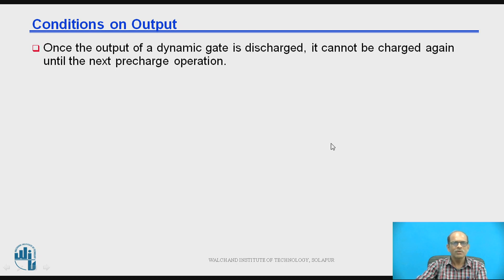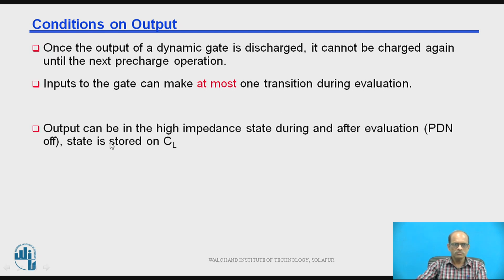Now conditions on the output. Now once the output of dynamic gate is discharged, it cannot be charged again until the next pre-charge. This is first condition. Second condition, input to the gate can make at the most one transition during the evaluation phase. Output can be in the high impedance state during and after the evaluation state is stored on the CL.